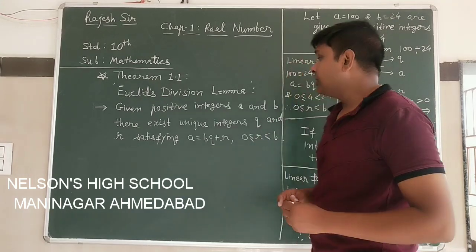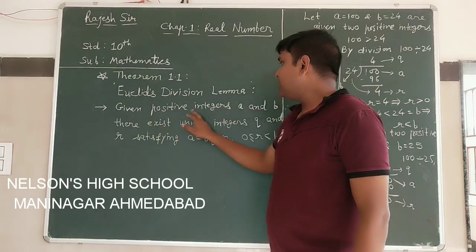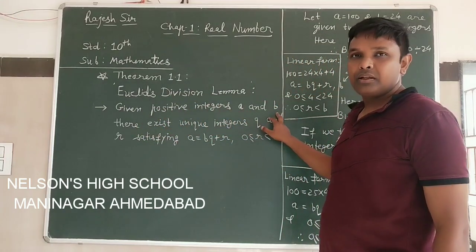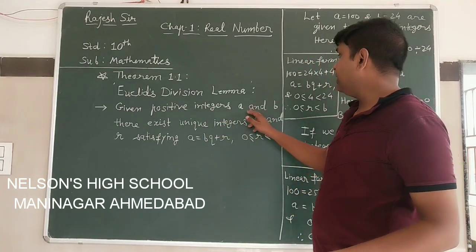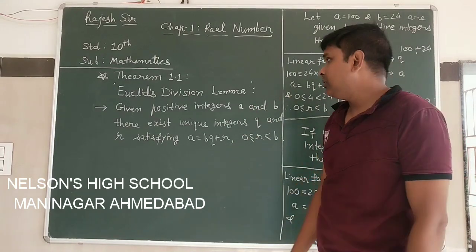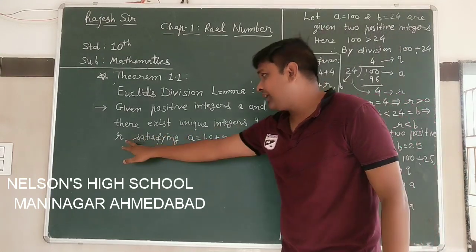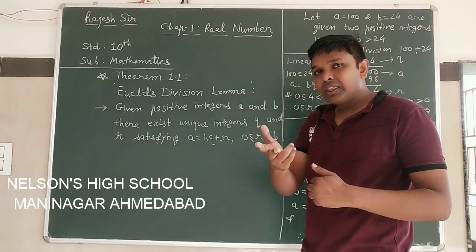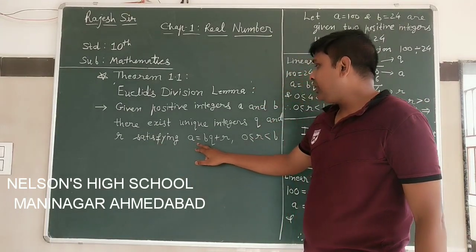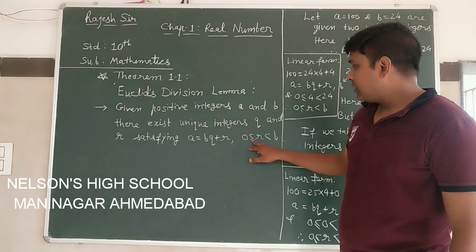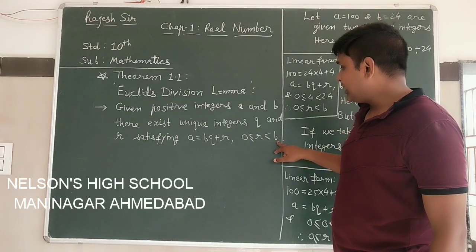Euclid's Division Lemma — its statement is: given positive integers a and b, that is, any two positive integers a and b, there exist unique integers q and r which satisfy: a equals b·q plus r, where r satisfies the condition 0 less than or equal to r, but less than b.